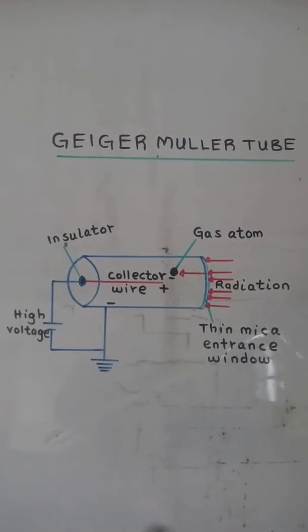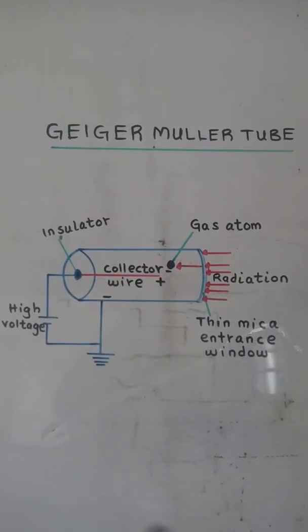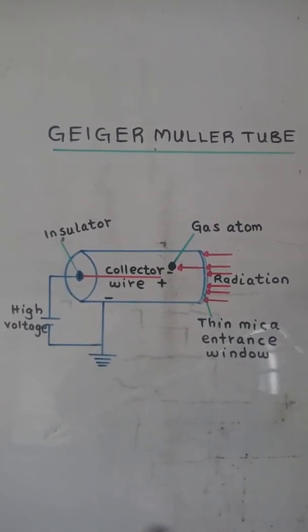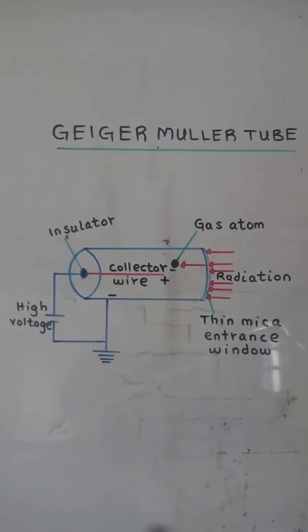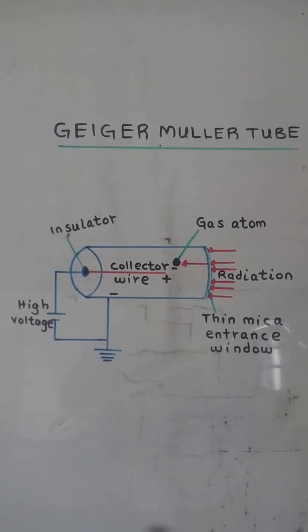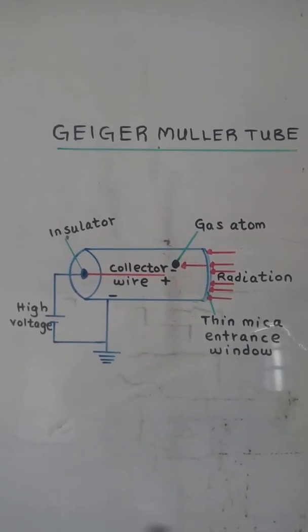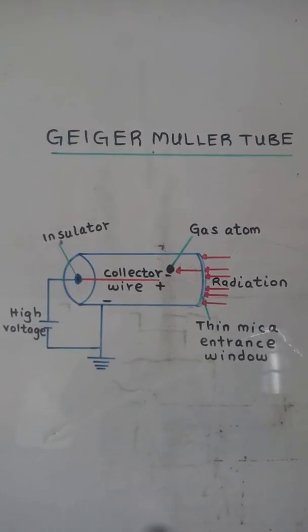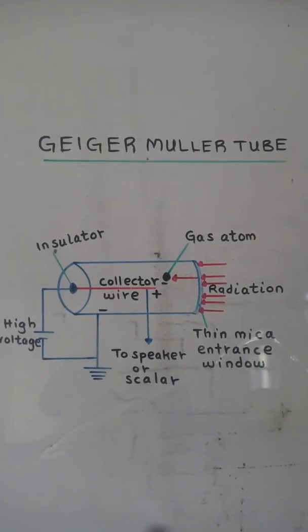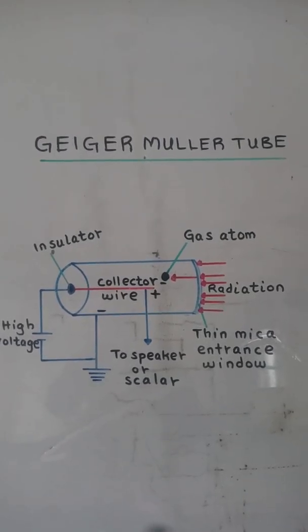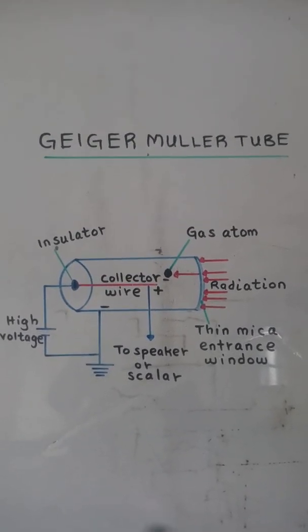When an electron strikes the wire, a brief pulse of electric current is produced. The current can cause a click in a speaker or be counted by a scaler.